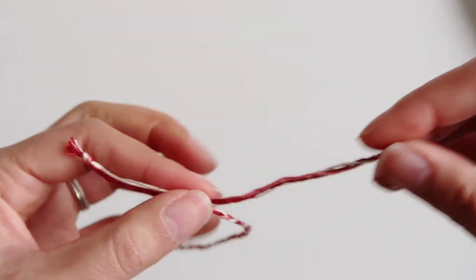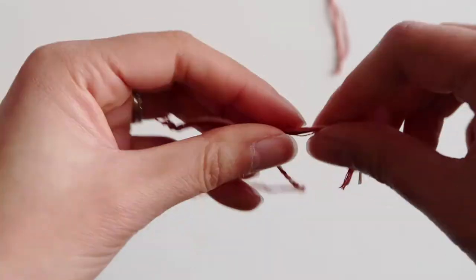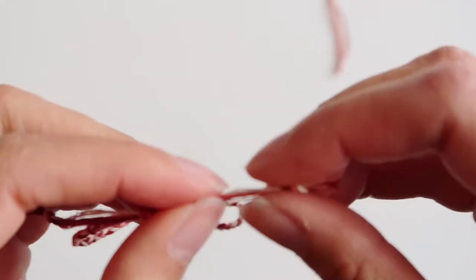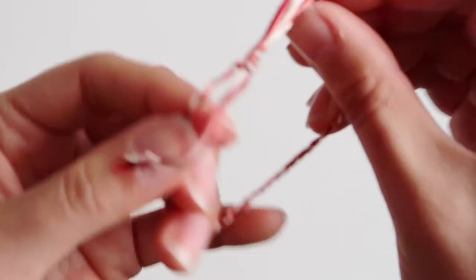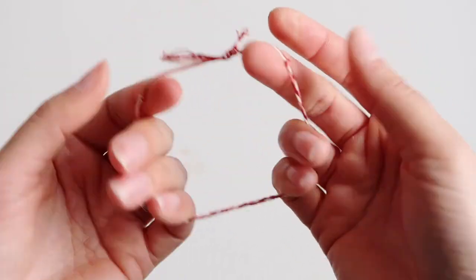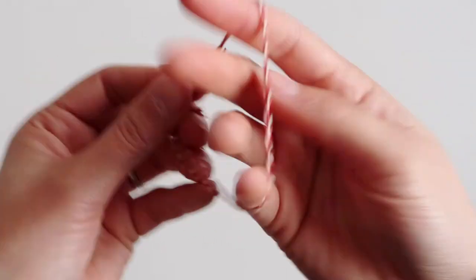Now all that's left to do is tie a little knot on either end to finish off your bracelet and to make sure that the big adjustable knot doesn't slide off the end. And then cut it to size and you are done.